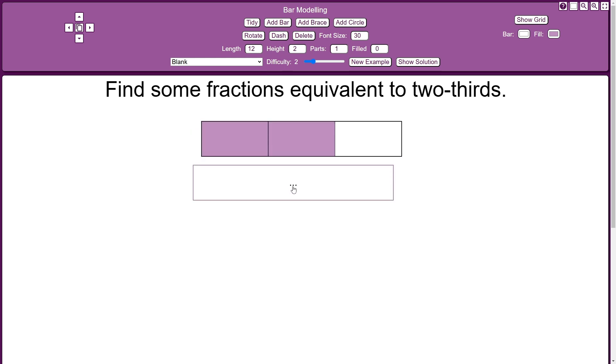Now I'm going to add a fresh bar, and this time each of these thirds I'm going to split into two. So that means I'm going to have to split this bar into six equal parts, or sixths. And you can see, each third is equivalent to two-sixths. So two-thirds is equivalent to four-sixths.